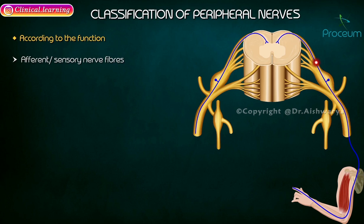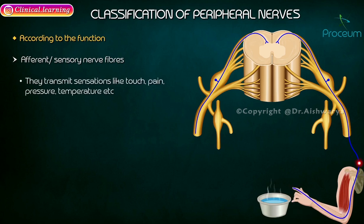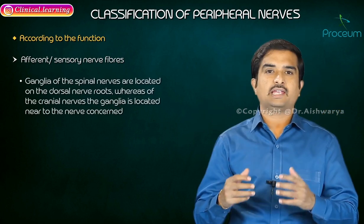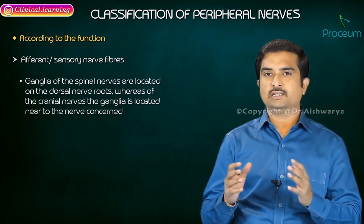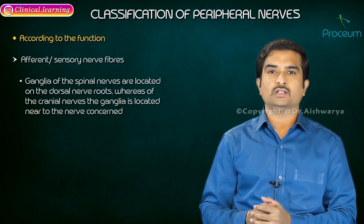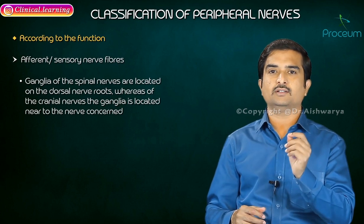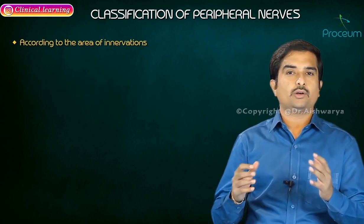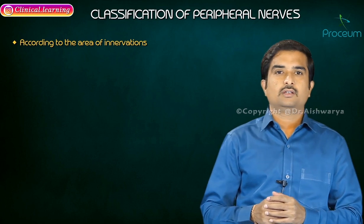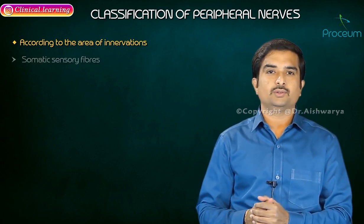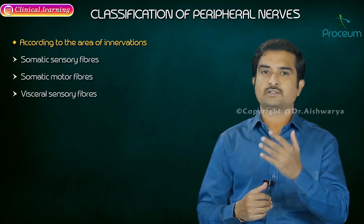The afferent or sensory nerve fibers carry impulses from the peripheral organs either to the brain or spinal cord. These fibers are the processes of neurons located in the sensory ganglia, and they transmit sensations like pain, touch, temperature, pressure, etc. The ganglia of spinal nerves are located on the dorsal nerve roots, whereas for cranial nerves the ganglia are located near the nerve.